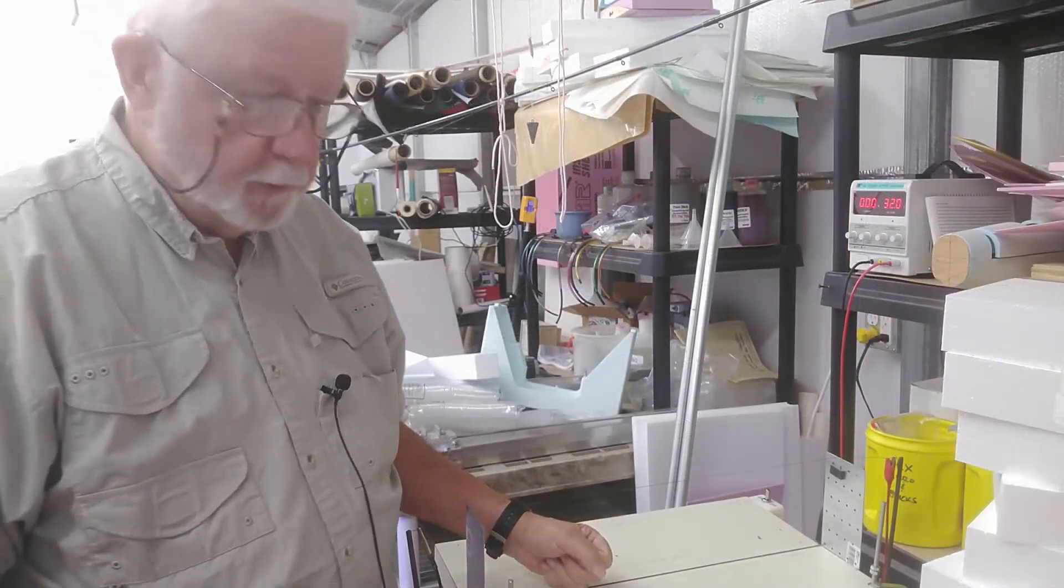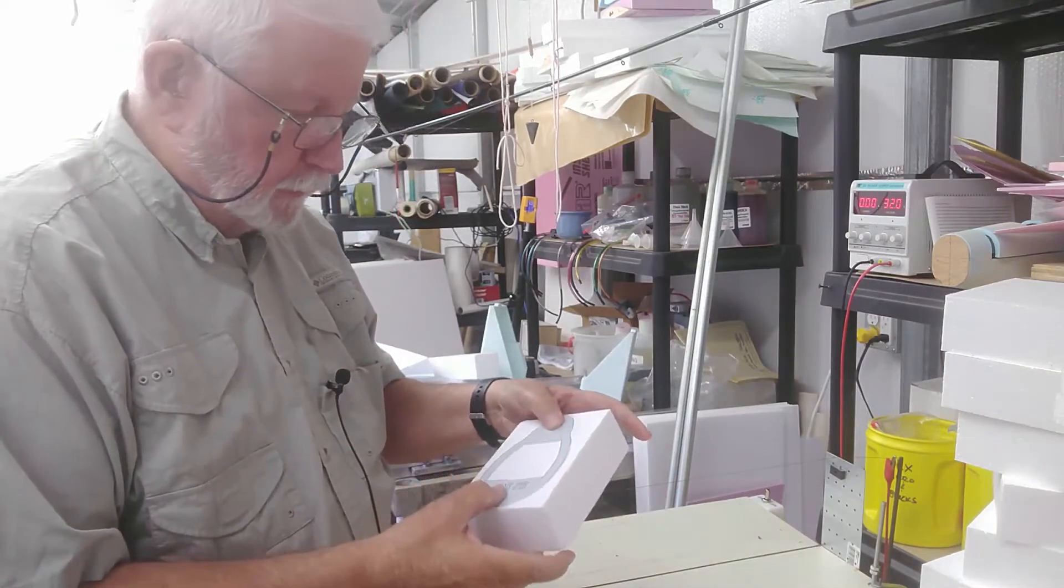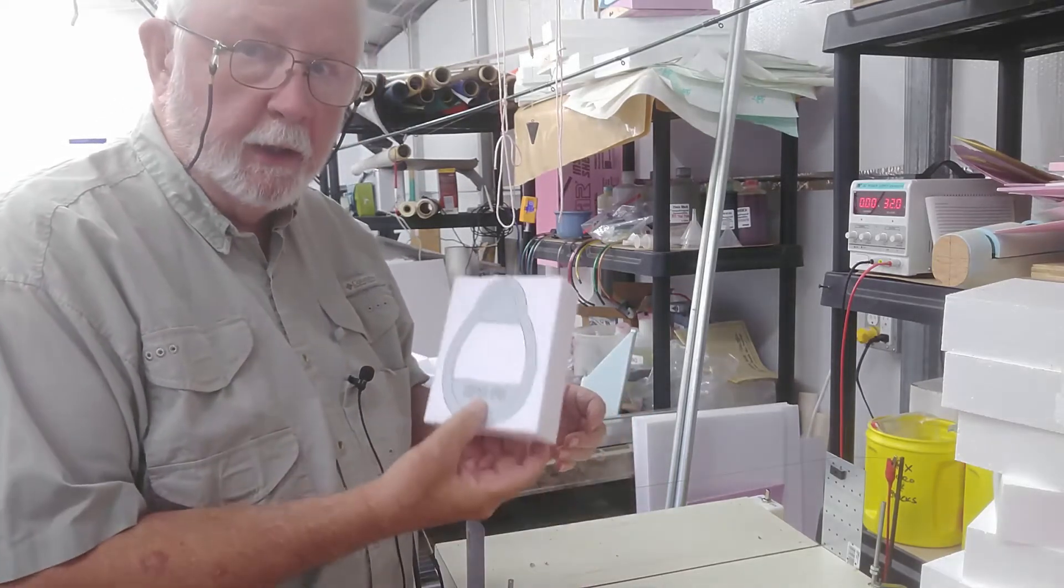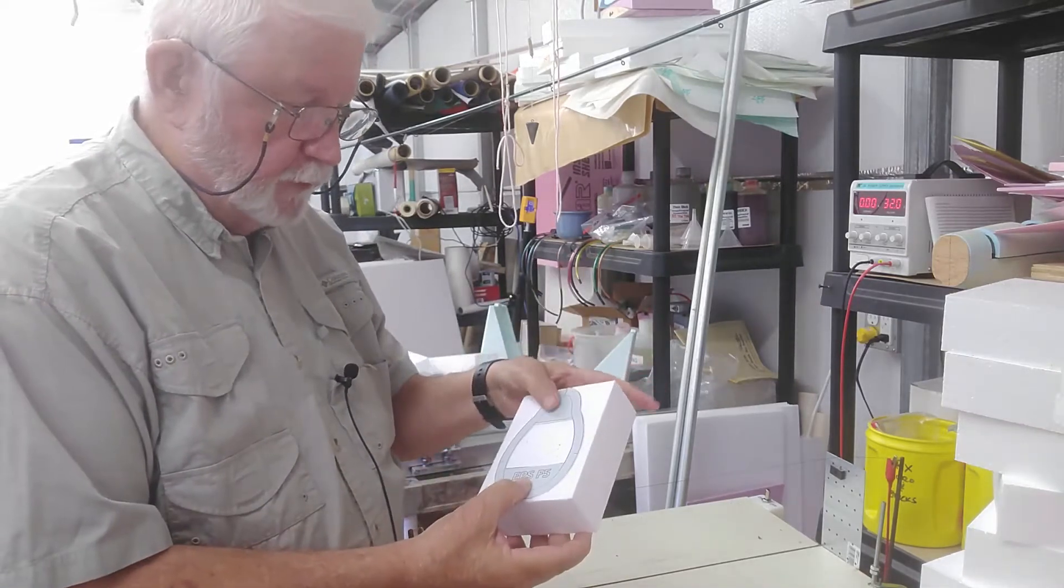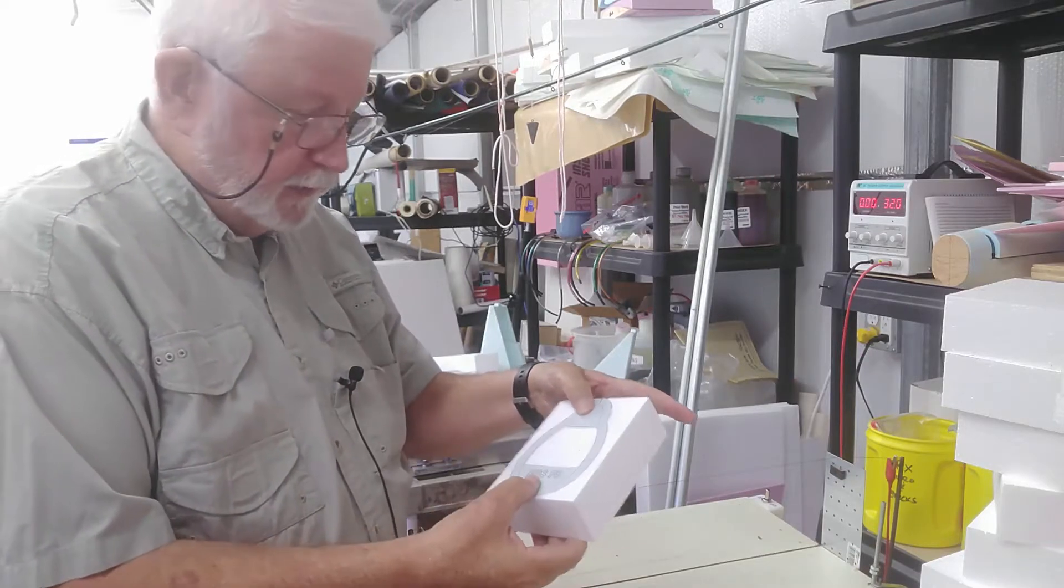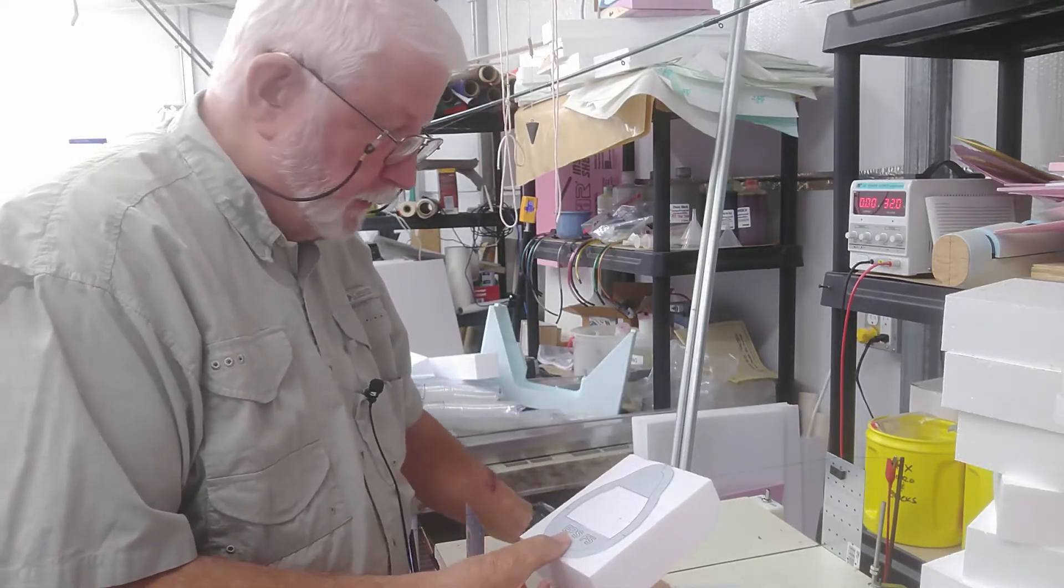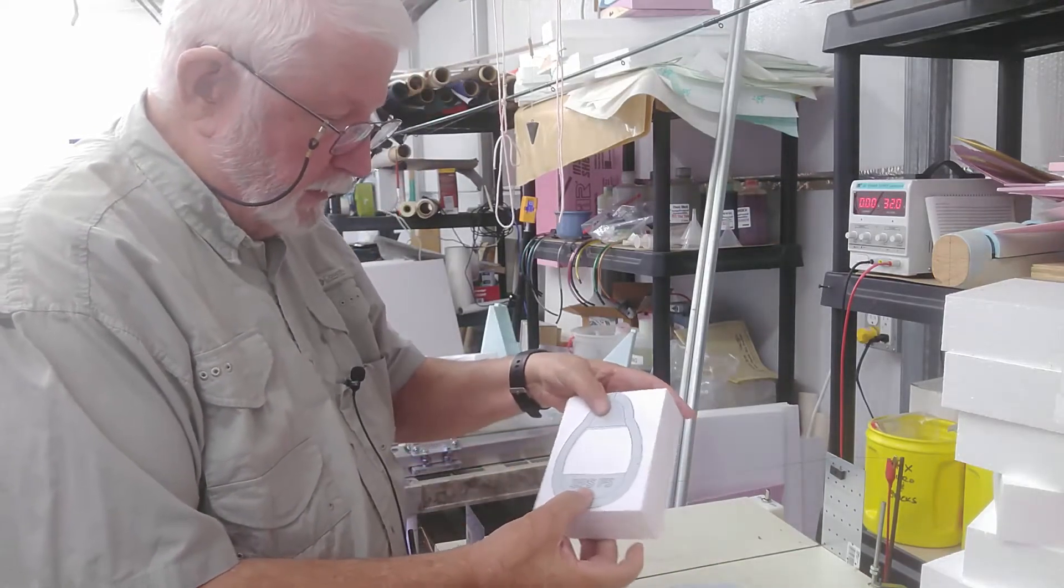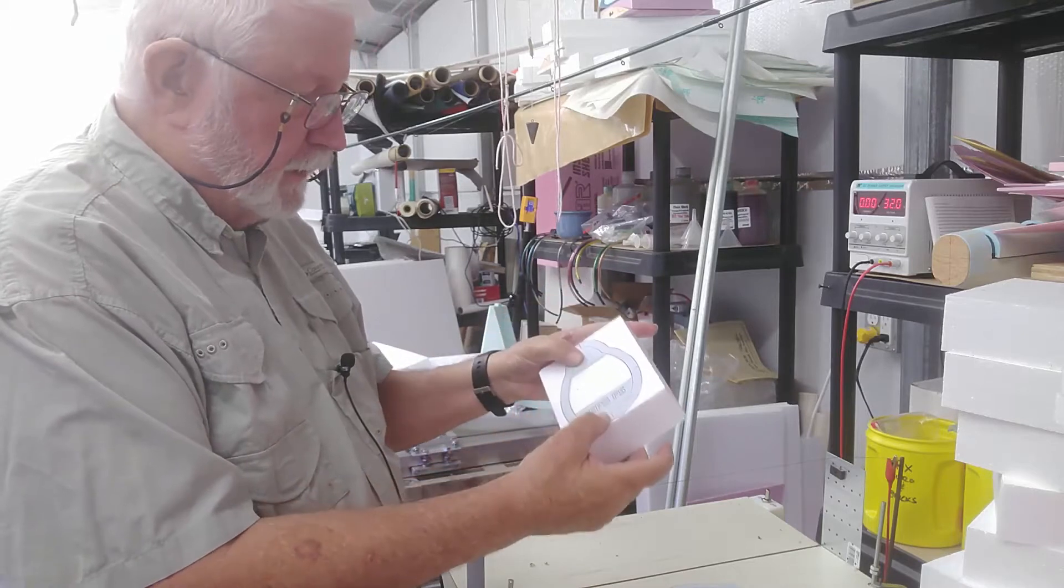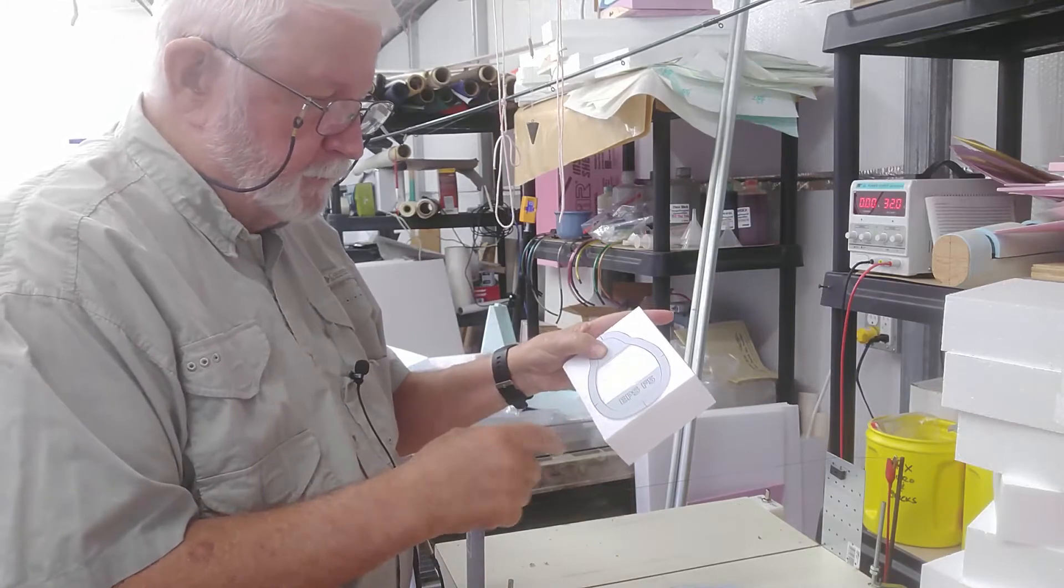Next up, we want to start putting some reference marks on our foam blocks. In order to do that so they'll all be encompassed in the block sizes we earlier determined, you have to pick out the tallest former. In this case, for both the EPS and XPS foams, it was F4 and F5. They turned out to be the tallest. We have a little bit of space at the bottom, a little bit at the top, and that means all the rest of the formers, when we line them up, will be encompassed in the blocks we've cut out.